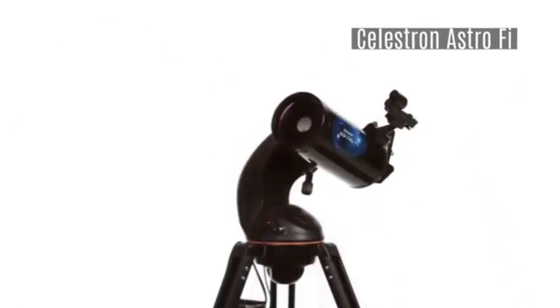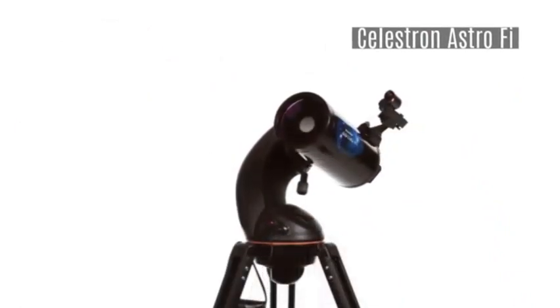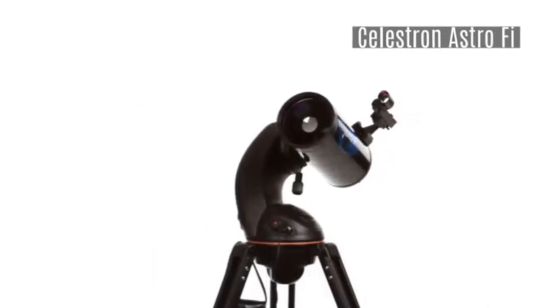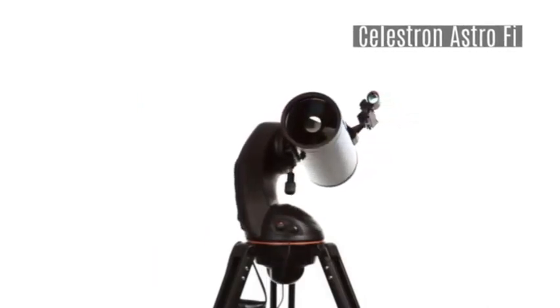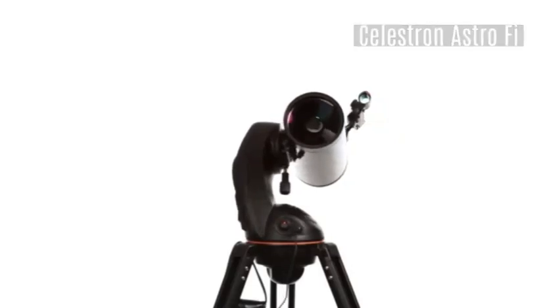Choose your view with three classic designs. Our 102 Maksutov-Cassegrain is compact and powerful with the longest focal length of all three AstroFi models for high contrast views.